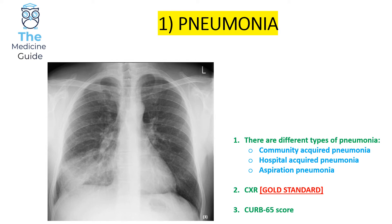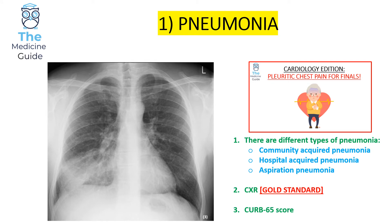There are different types of pneumonias: community acquired pneumonia, hospital acquired pneumonia, and aspiration pneumonia. For further detail please have a look at my pleuritic chest pain for finals. The key things to remember about pneumonia are that a chest x-ray is your gold standard investigation and your CURB-65 score is really important for triaging patients presenting with different severities of pneumonia — it also affects the management plan required.